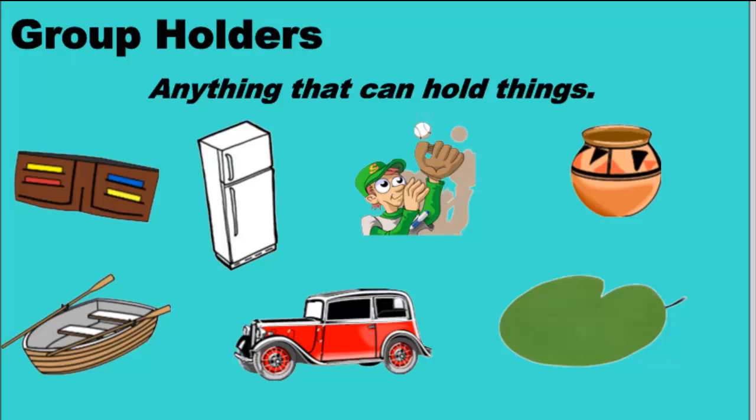Well, another way of saying group is group holder, and we use the word holder because groups hold things. Anything that can hold things can act as a group holder. We have seven examples here. We've got wallets that hold money and coins, refrigerators, a baseball glove or a hand, pots, lily pads, cars, and boats. These are examples of group holders.